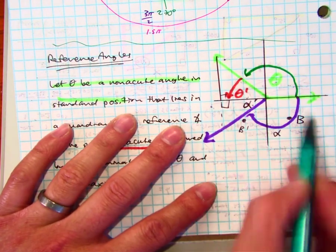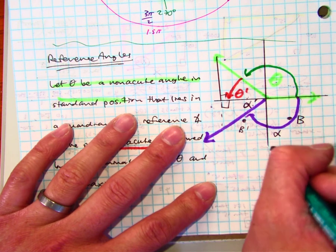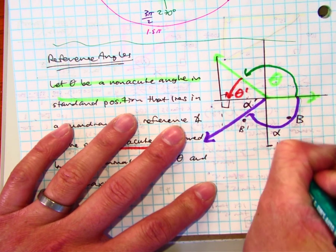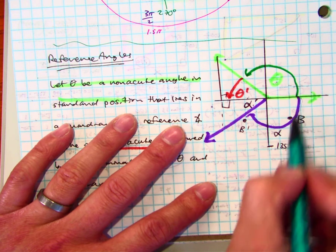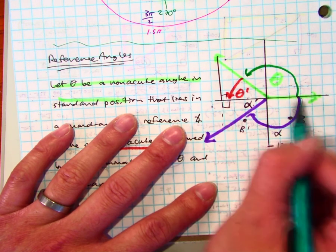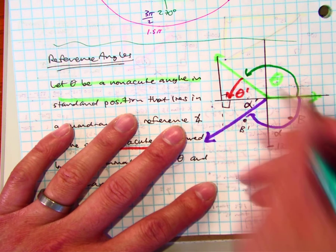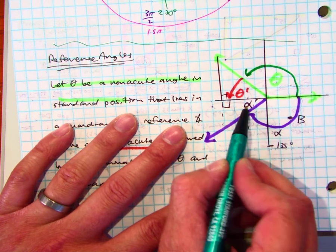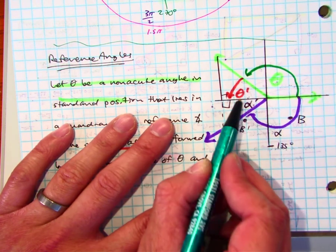This angle, let's say, is negative 135 degrees. That means this is going to be half of a circle, which is 180 degrees, so this would technically be—I need another negative 45 degrees.